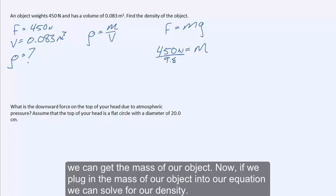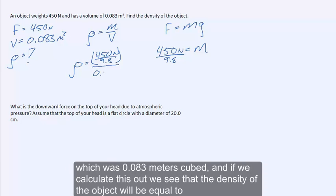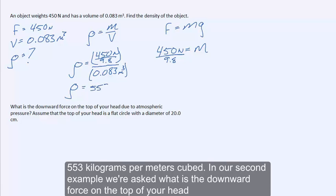Plugging the mass into our density equation, we see that the mass equals 450 newtons divided by 9.8, divided by the volume of 0.083 meters cubed. Calculating this out, the density of the object equals 553 kilograms per meter cubed.